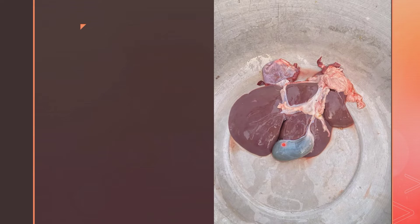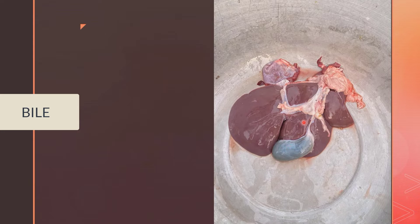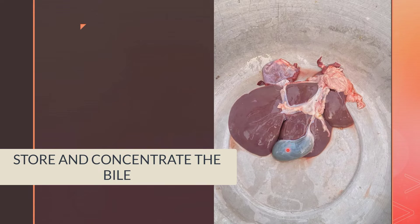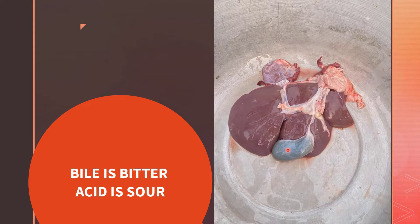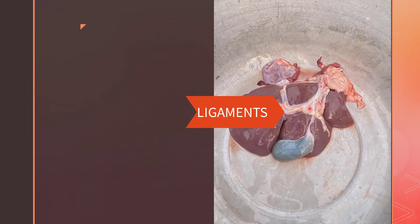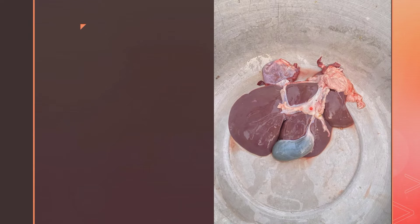Below the liver you can observe a greenish pouch-like structure called the gallbladder. The liver produces a green fluid named bile, and the function of the gallbladder is to store and concentrate the bile. If you've ever vomited on an empty stomach, you might have felt that bitter taste — that's bile. The sour taste is due to stomach acid. You can also see various ligaments on the liver, possibly the falciform ligament. Don't worry about the names now, as you'll be learning them in upcoming anatomy classes.